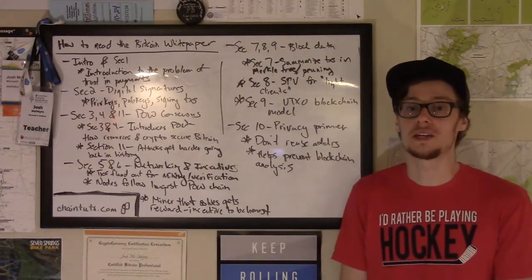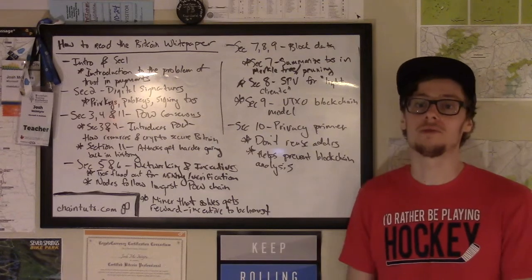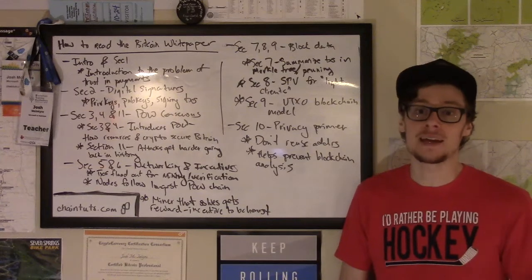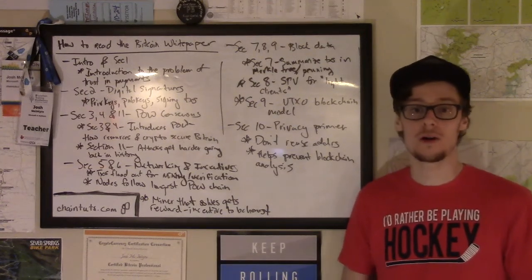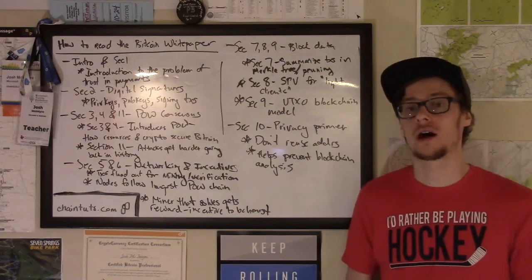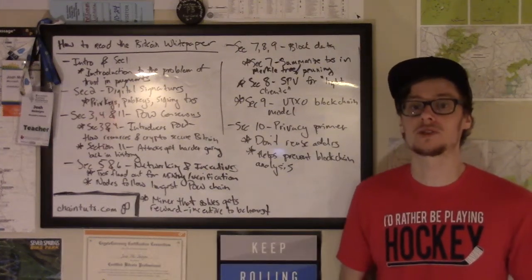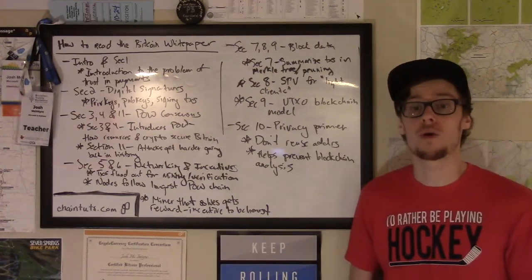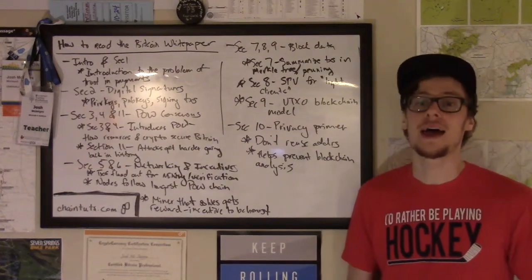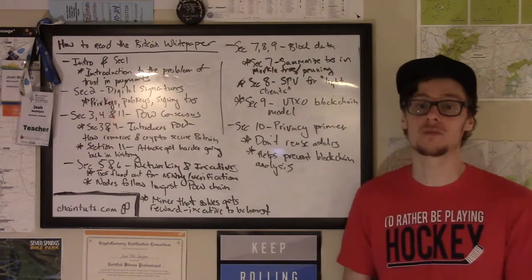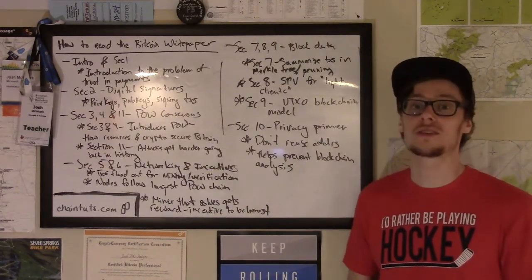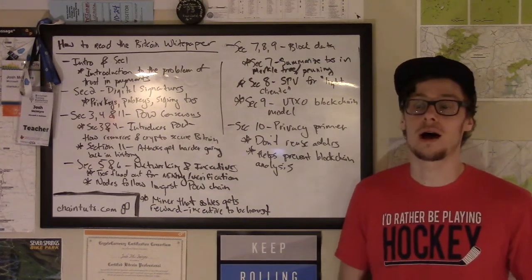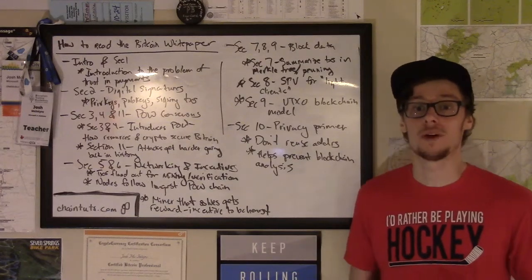When the Bitcoin white paper was released into the world, it helped solve the problem of needing trust when it comes to online payments. I recommend that anybody interested in cryptocurrencies read this paper, but it can be a little bit terse and hard to understand if you don't already have an idea of some of the concepts that exist in Bitcoin. So this tutorial is going to be a high level overview of the different sections in the Bitcoin white paper and how to understand roughly what these algorithms and concepts are. You can use this as a companion as you walk through the Bitcoin white paper and understand what Satoshi was talking about with his revolutionary new Bitcoin system.